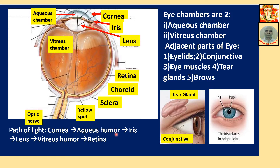What is the path of light? Light first penetrates the cornea, then traverses the aqueous humor in the aqueous chamber, then falls on the lens, then passes through the vitreous humor in the vitreous chamber, and finally falls on the retina where the image is formed. This is the physiology of the eye.